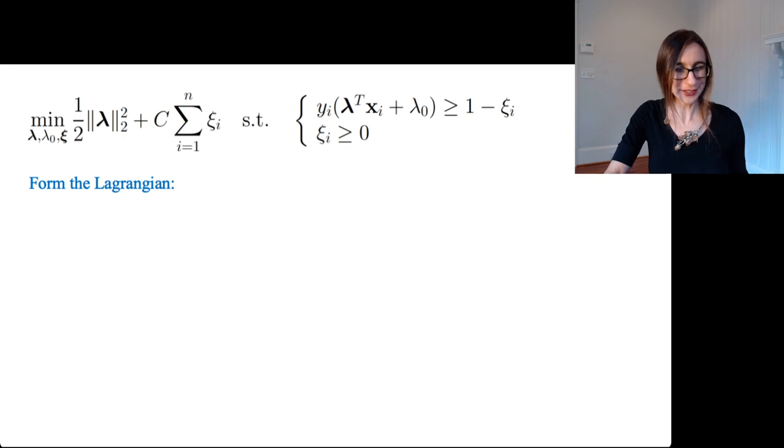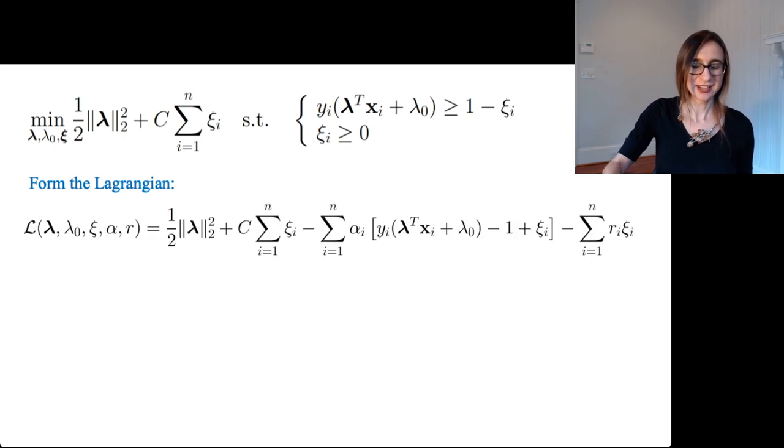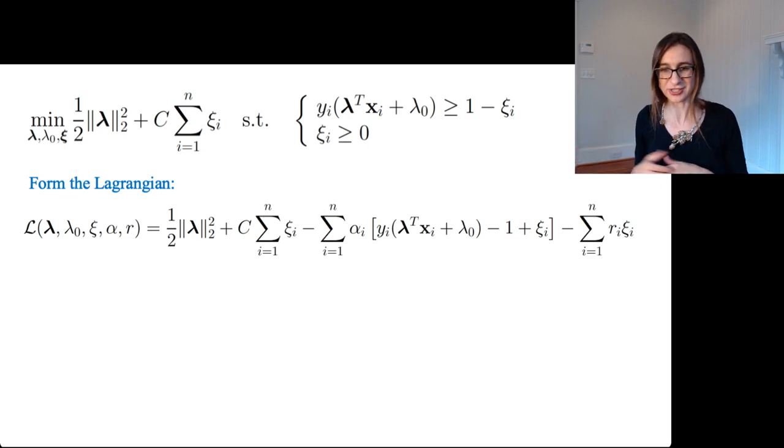Okay, so we're going to form the Lagrangian, which looks like this. And now there are two sets of inequality constraints. They're the ones that you'd expect and then there are the new ones with the xi's being greater than or equal to zero. Those are inequality constraints, so I couldn't use the alphas again because I used them in the other set of constraints. And I can't use betas because those are for affine constraints, so I used r.